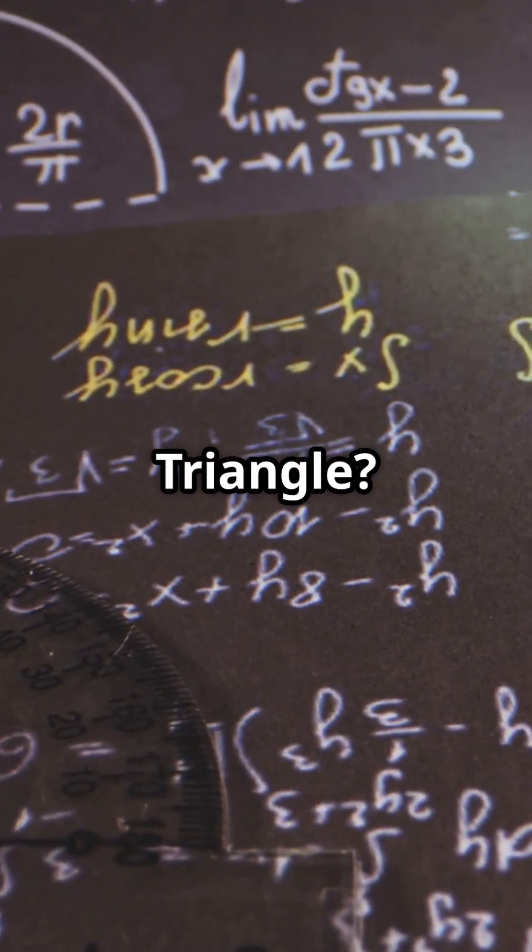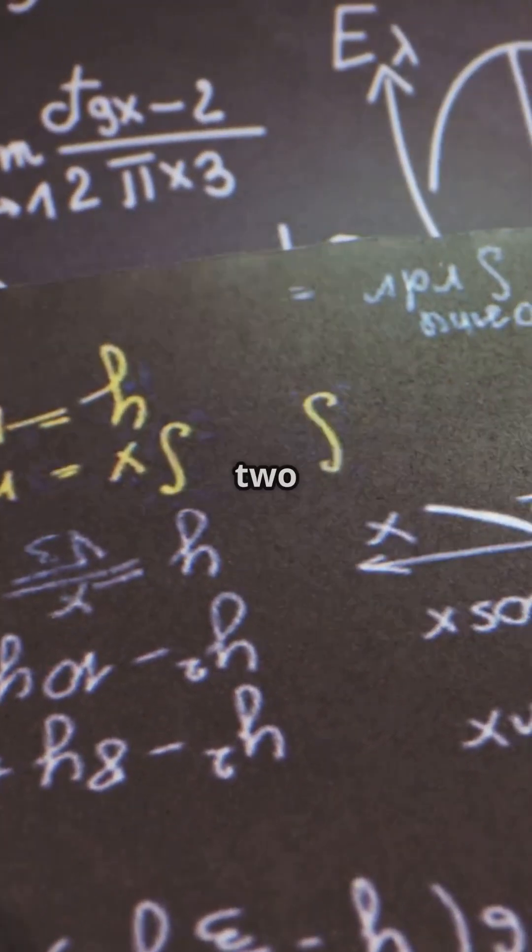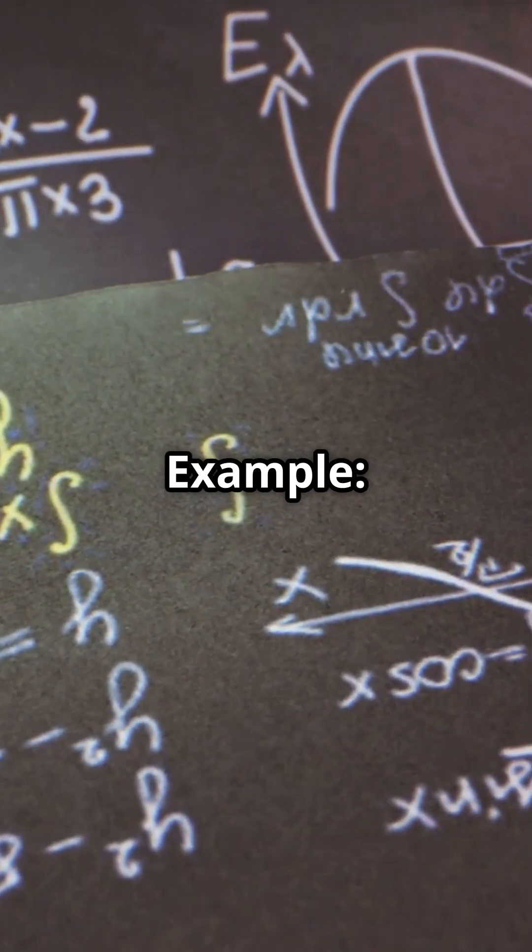What is Pascal's triangle? It's a triangular arrangement of binomial coefficients. Each number is the sum of the two numbers directly above it.